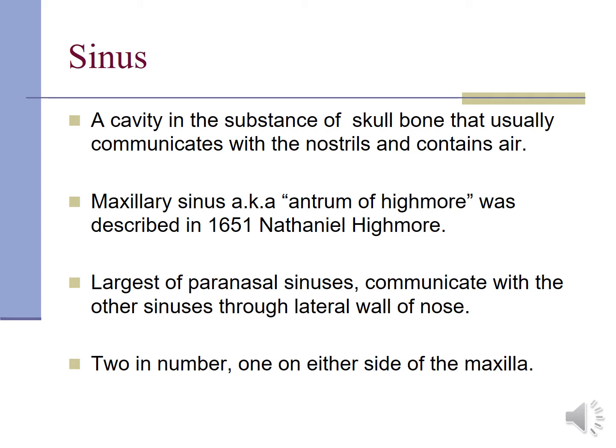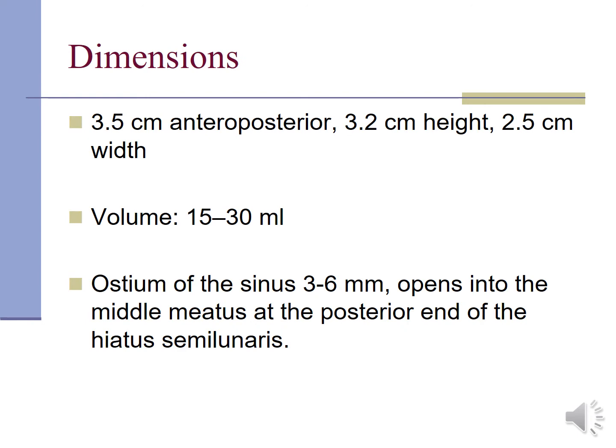The other paranasal sinuses are frontal, ethmoidal, and sphenoidal. The maxillary sinus is two in number, one on either side of the maxilla. The dimensions are 3.5 cm anteroposterior, approximately 3.2 cm in height and 2.5 cm in width. The volume of the maxillary sinus is around 15 to 30 milliliters. The ostium of the sinus is 3 to 6 mm and opens in the middle meatus at the posterior end of the hiatus semilunaris, which is on the medial wall of the nose.